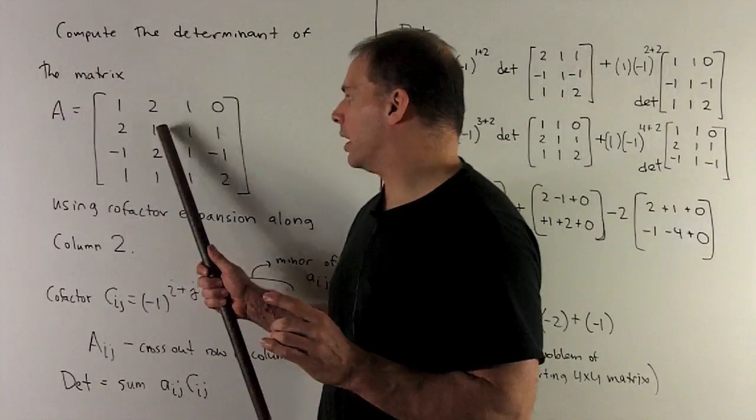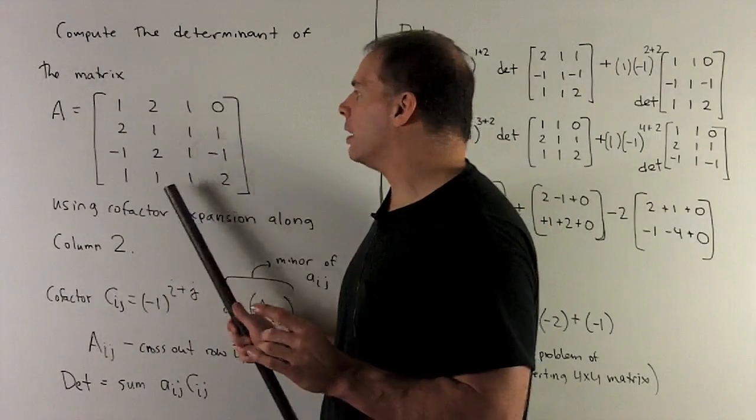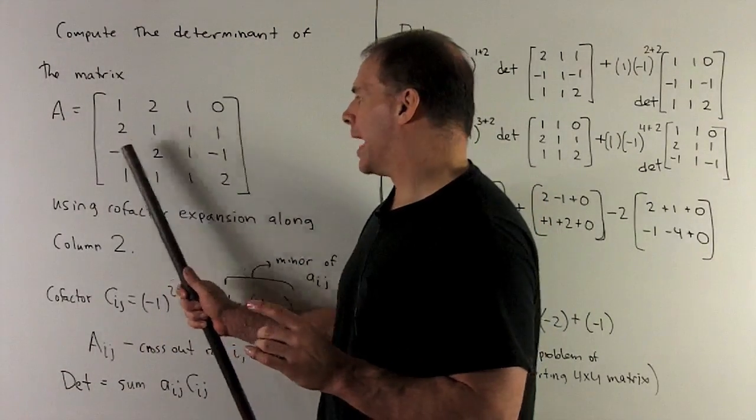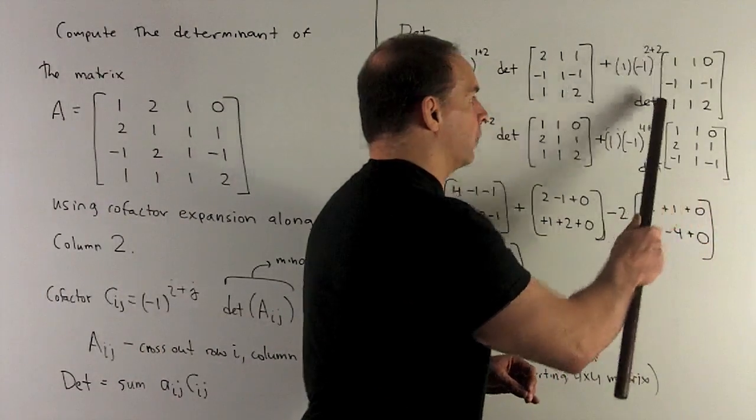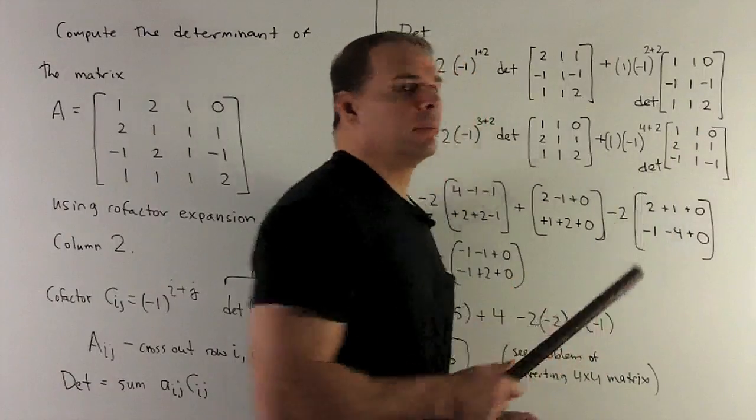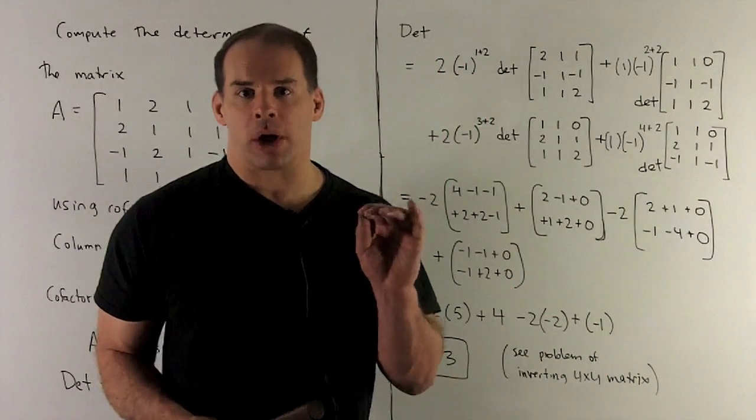For the next one, right here, cross out row and column. 1, 1, 0. Minus 1, 1, minus 1. 1, 1, 2. Gives us our 3 by 3 here. I take the determinant. And then, same idea as I work down the column.